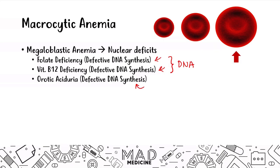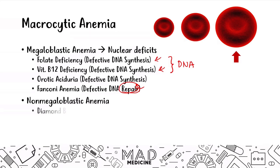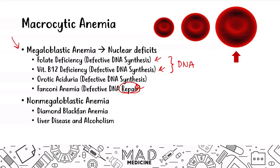We're going to talk about orotic aciduria in a second. You can also have something called Fanconi anemia. With Fanconi anemia, it's not about synthesis but actually about DNA repair. The defect occurs when you have to repair the DNA, and because you can't properly repair the DNA, you're going to have a nuclear deficit, leading to a megaloblastic anemia. Non-megaloblastic anemias are very simple — you have Diamond-Blackfan anemia, liver disease, and alcoholism. The megaloblastic anemias are going to be the more difficult ones to grasp, and I highly recommend spending a good amount of time understanding them and doing plenty of practice questions.